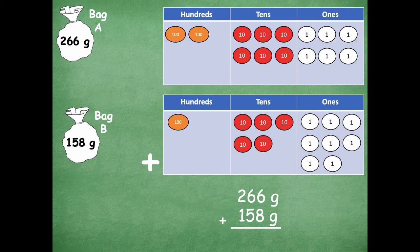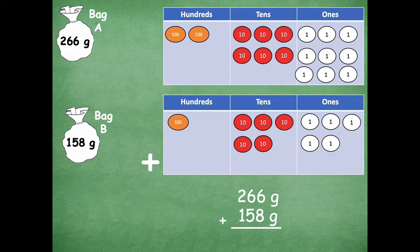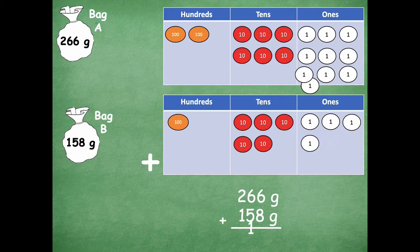So we are going to start in the ones place and we have eight ones plus six ones. So I'm going to move some of these ones to make a 10. So I have seven, eight, nine, 10. So I'm going to label that 10 down in my problem on the tens place. And then I am left with four ones. So really I had 14 ones and I renamed it as one ten, four ones.